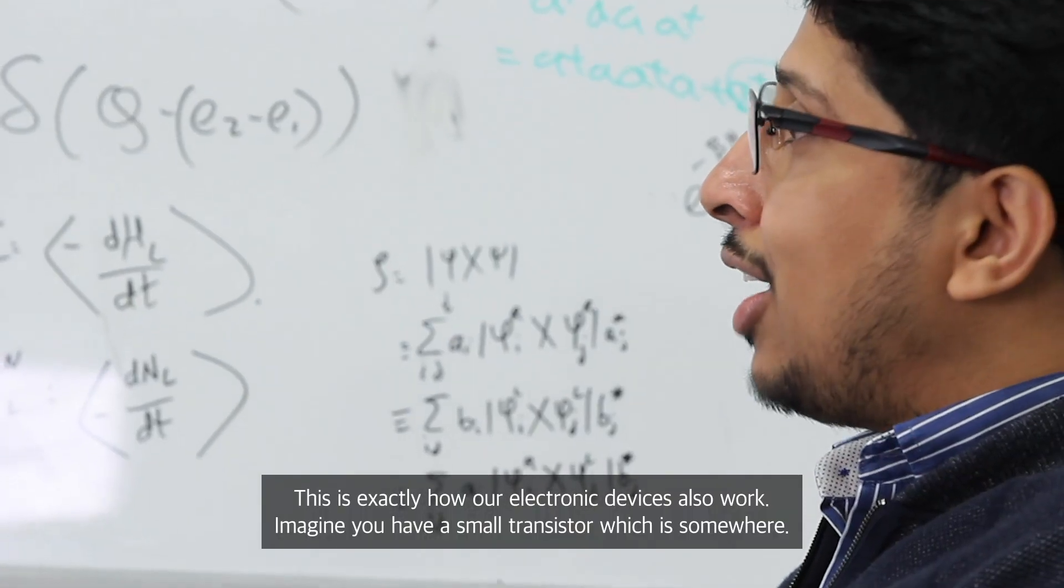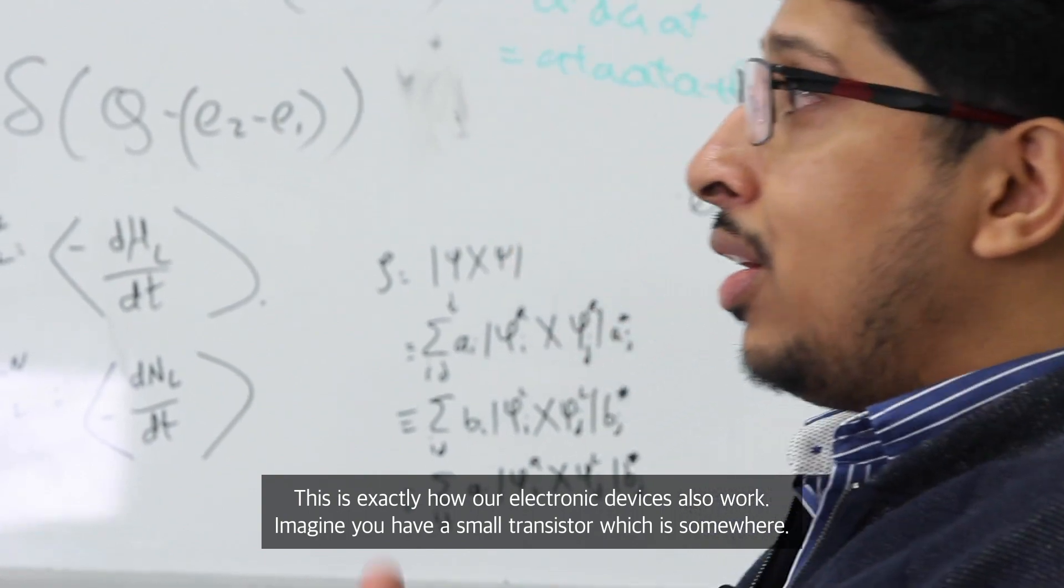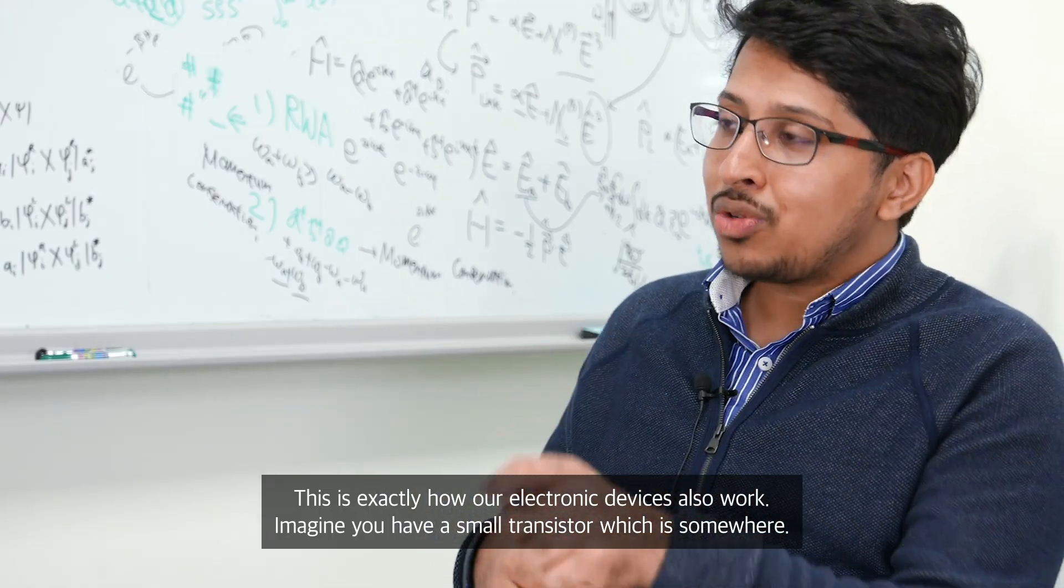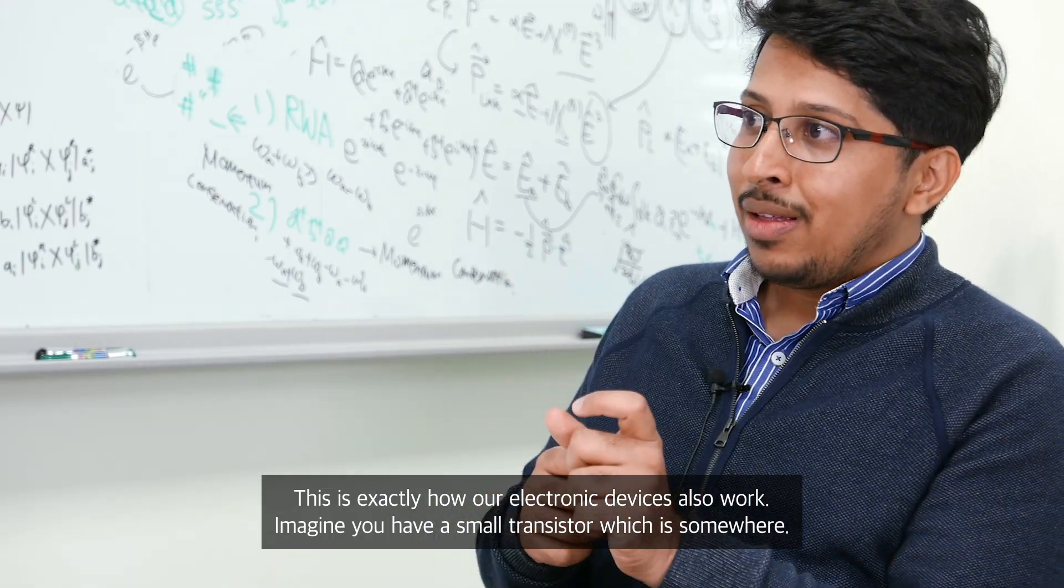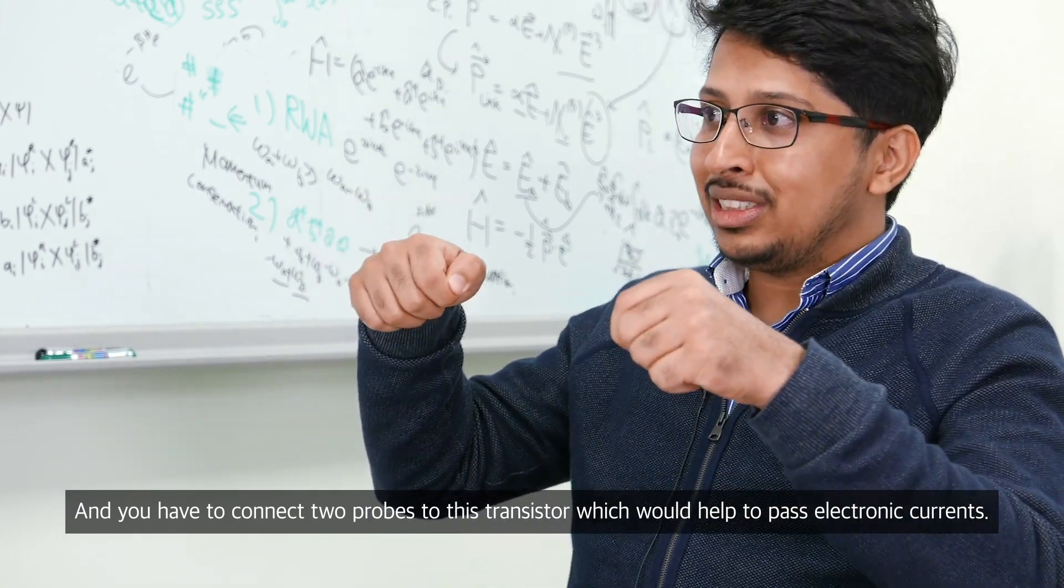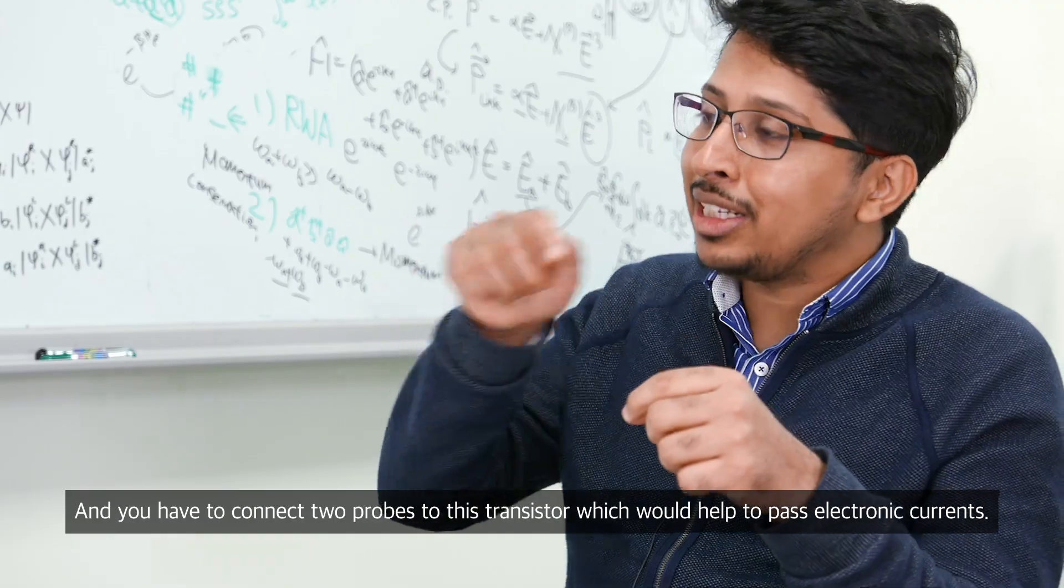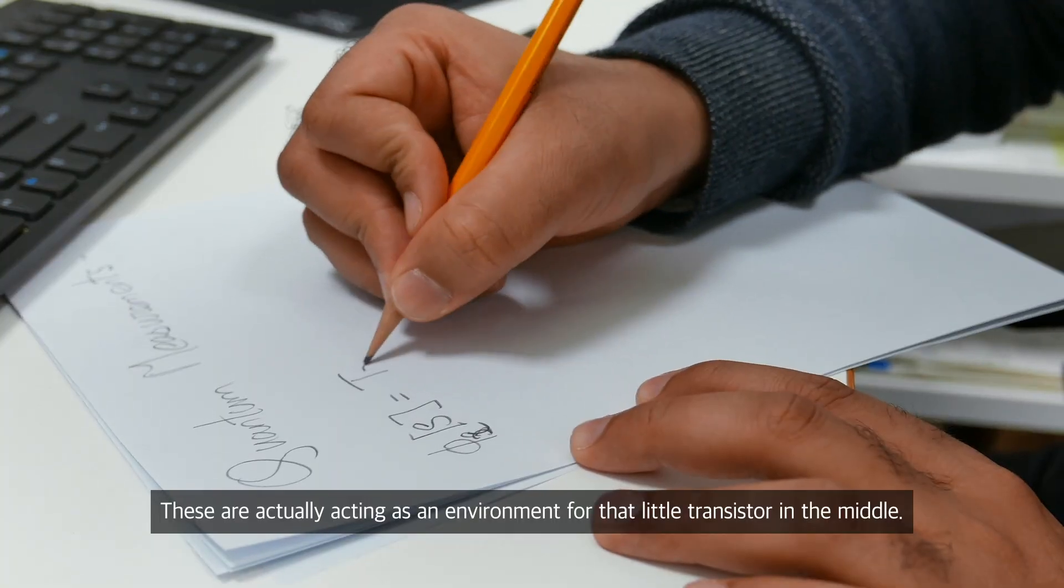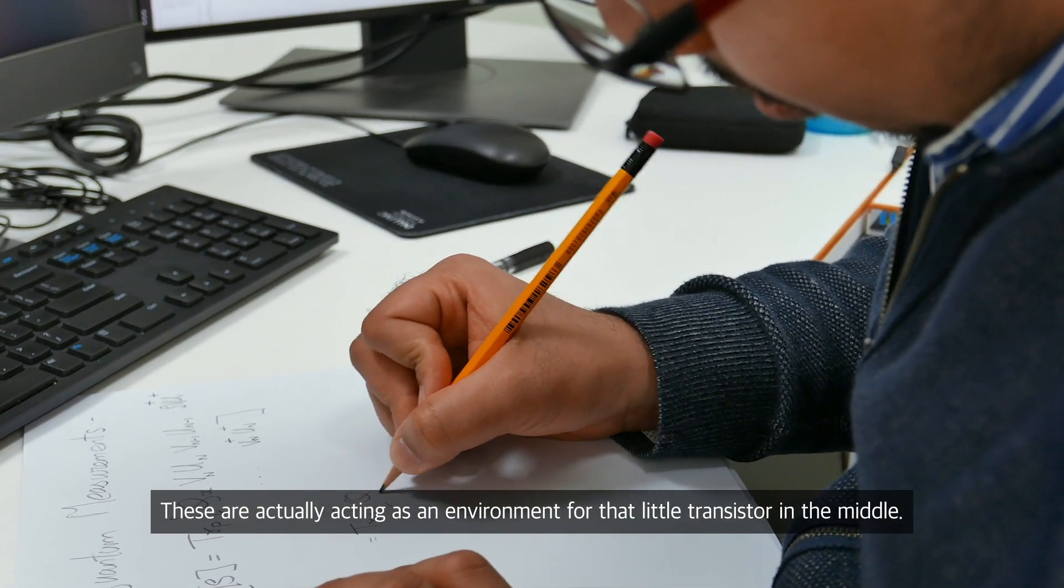This is exactly how our electronic devices also work. Imagine you have a small transistor which is somewhere and you have to connect two probes to this transistor which would help to pass an electronic current, and these are actually acting as an environment for that little transistor in the middle.